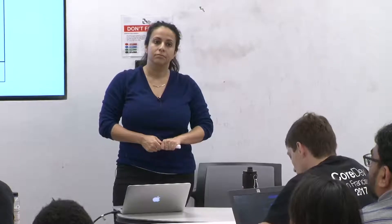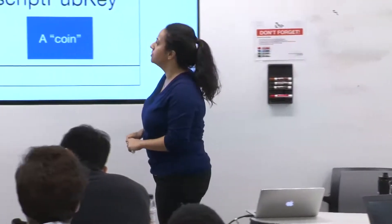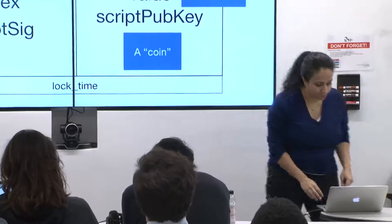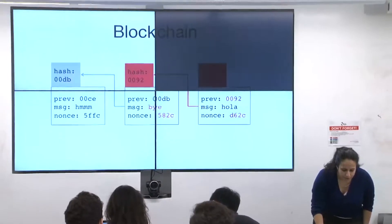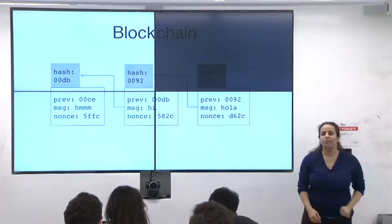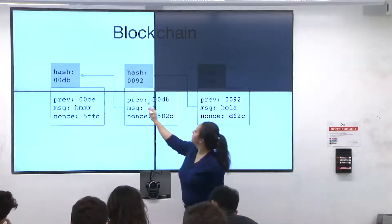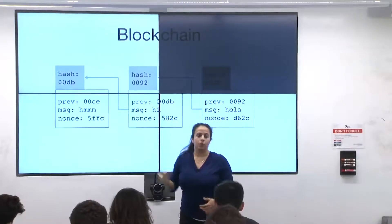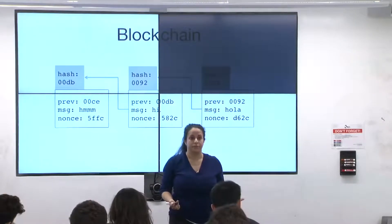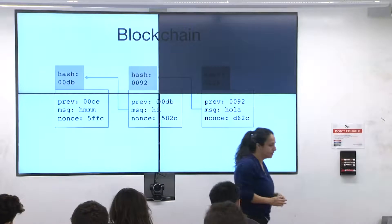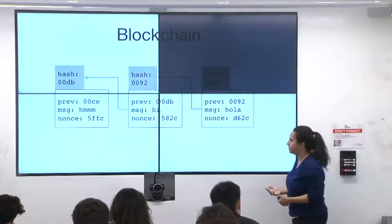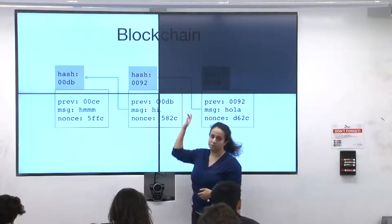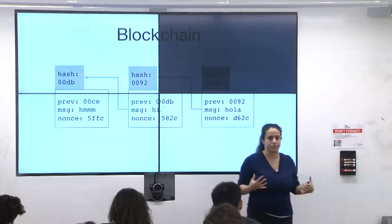Where does the name 'chain' come from — is it more like a tree? The name blockchain comes from how we chain the blocks of transactions together. What we're talking about right now is what goes inside each block, which are transactions. For the moment, you can think of each block as containing just one transaction, but a block can contain a set of transactions.